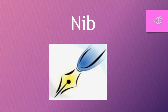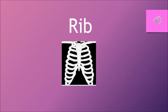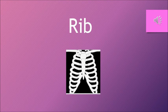Next is Nib. Sound of N is Na, then Ib — Na, Ib, Nib. Can you see the yellow pointed part of the pen? That is called a Nib. And next, R, Ib, Rib — it is a part of our body.